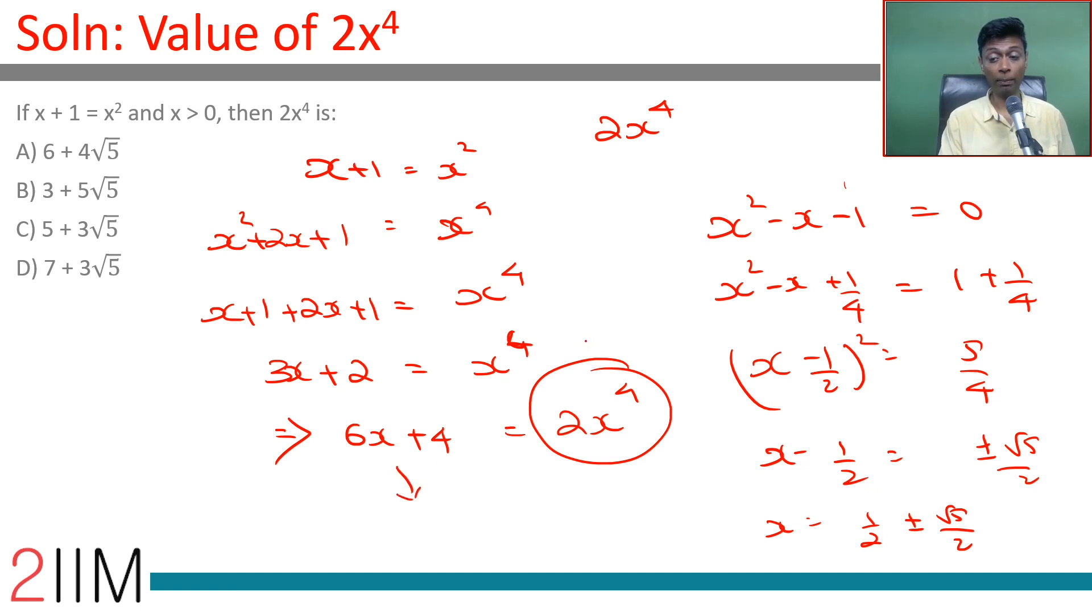x = (1 + √5)/2. We want to find 6x + 4 where x = (1 + √5)/2, so 6(1 + √5)/2 + 4.